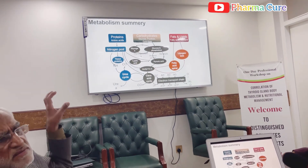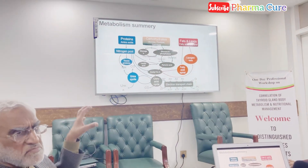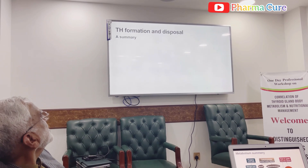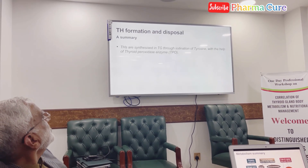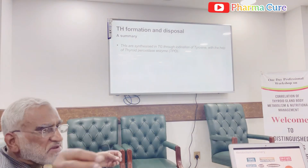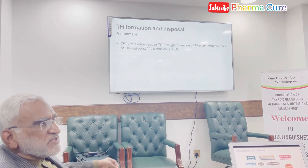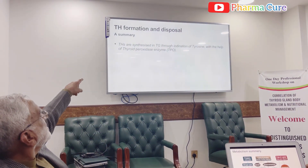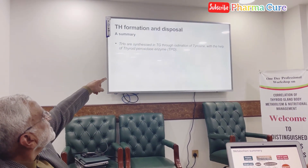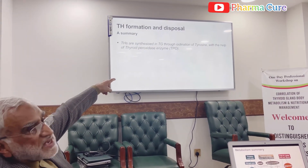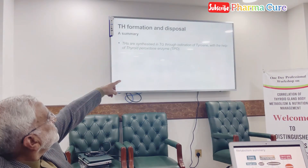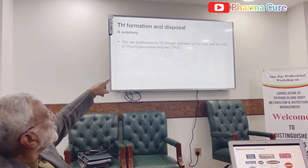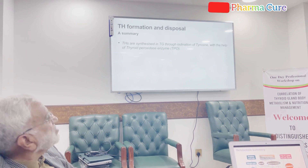This is the metabolism of thyroid hormones. Thyroid hormones are synthesized in the thyroid gland through iodination of tyrosine, with the help of thyroid peroxidase enzyme, TPO.